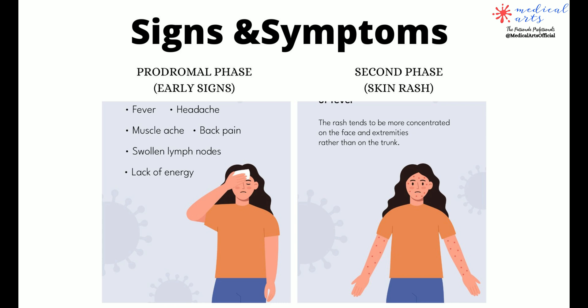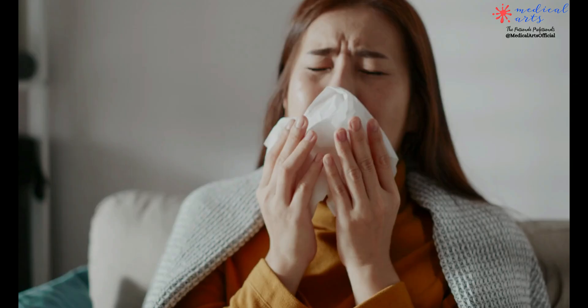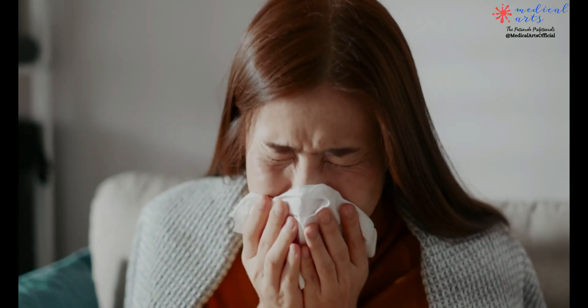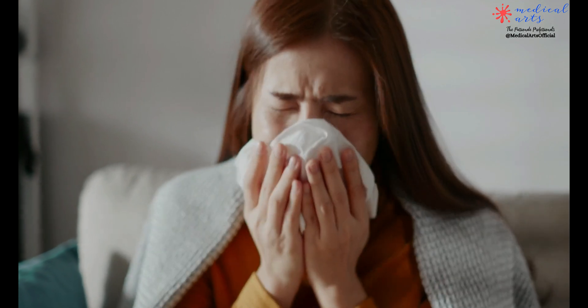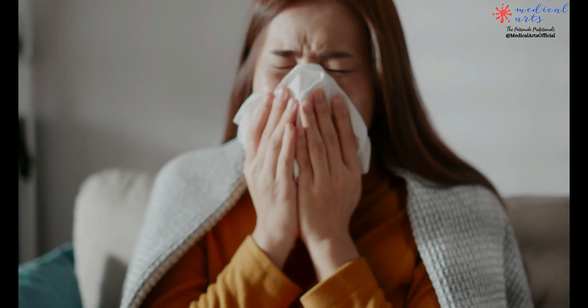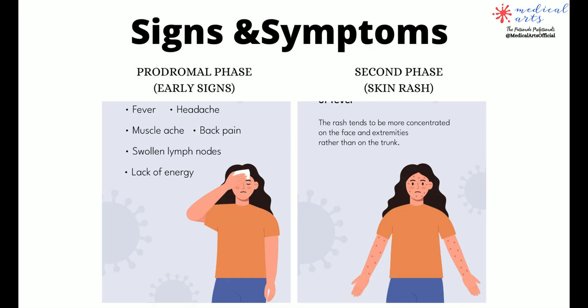Other symptoms have also been described, such as sore throat, cough, and less frequently vomiting or diarrhea. Shortly after the prodrome, the second phase starts and a rash appears.